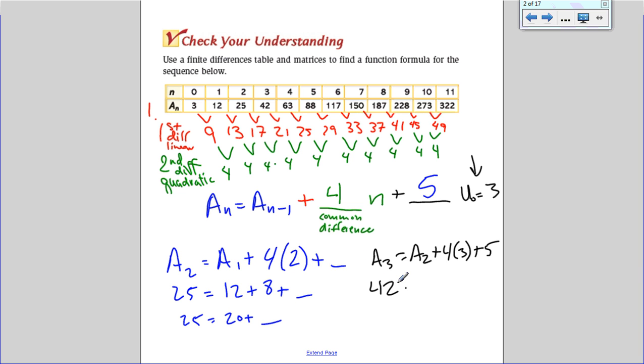which equals, a sub 2 is 25 again, plus 12 plus 5, which does equal 42. As you can see, we get 37 here plus the 5 equals 42.